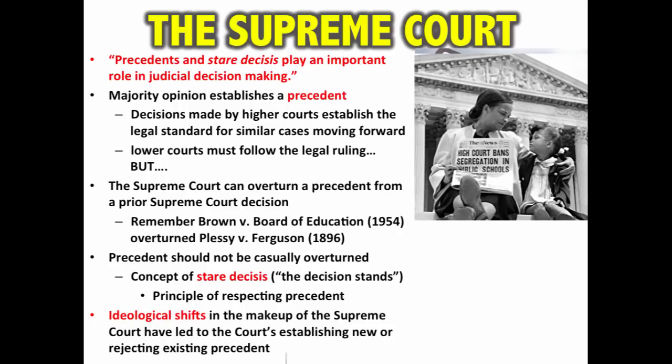Democratic senators will often ask a conservative judge their feelings about Roe v. Wade, and Republican senators will often ask more liberal judges their opinions regarding mandated health insurance or Obamacare. Both sides are trying to gauge whether a judicial nominee likes certain precedents and would be willing to overturn them.